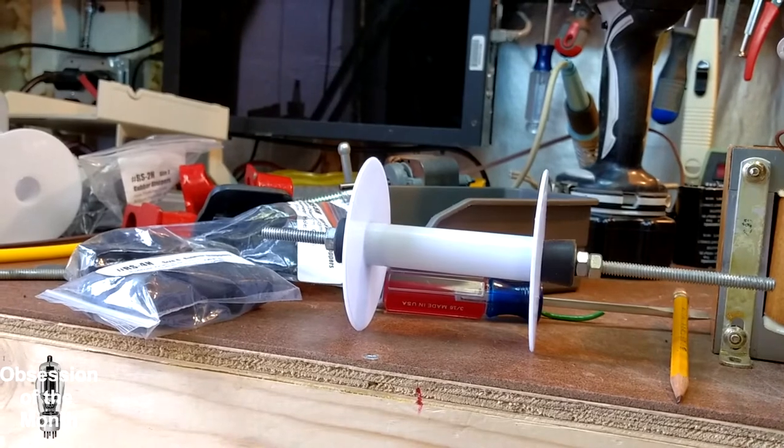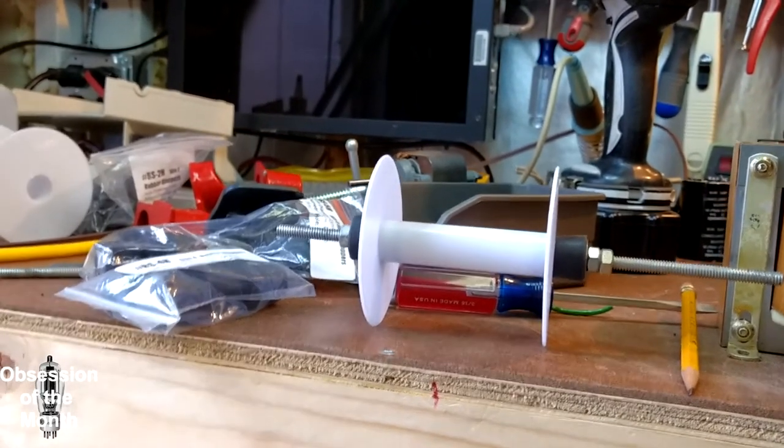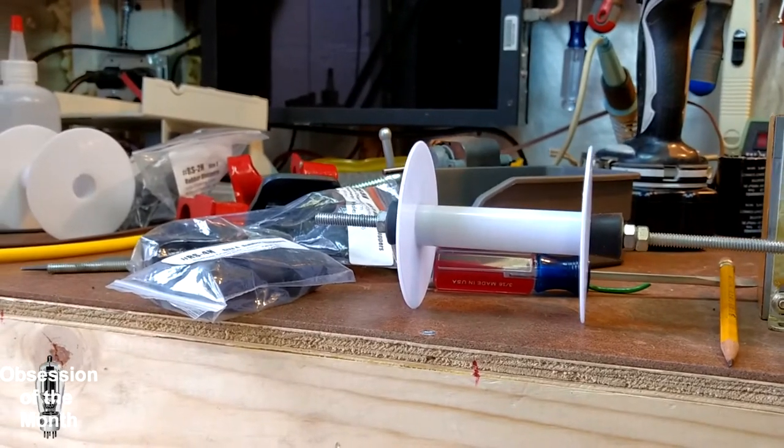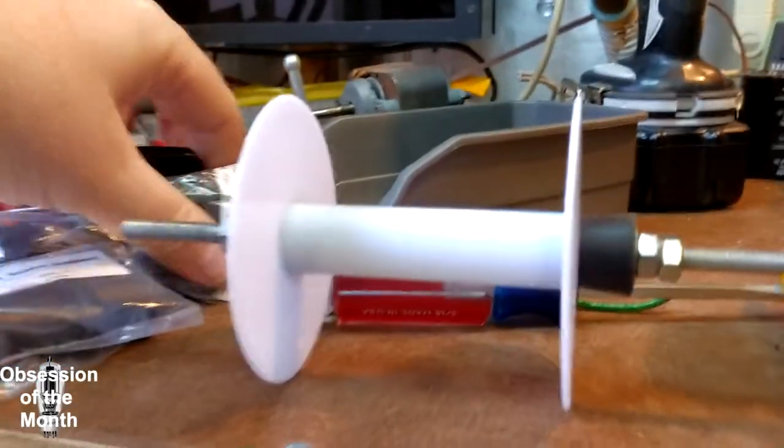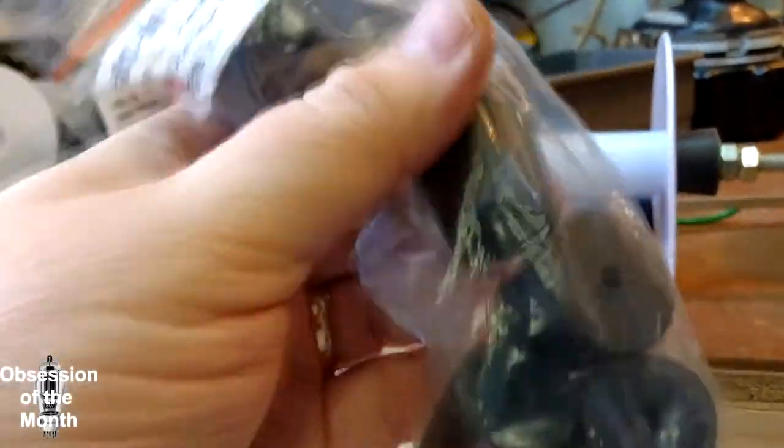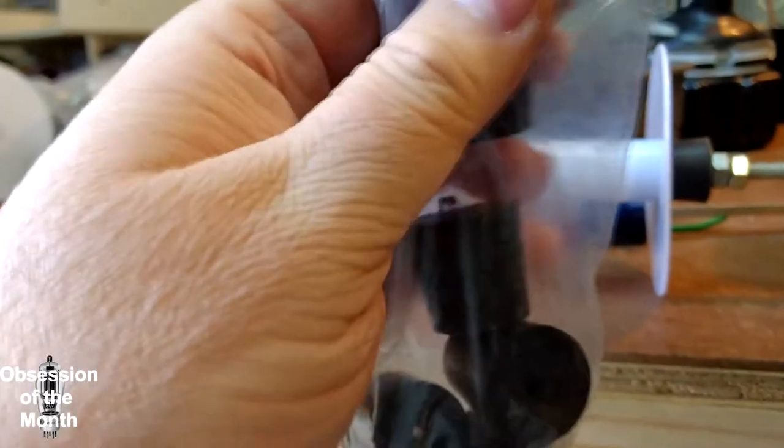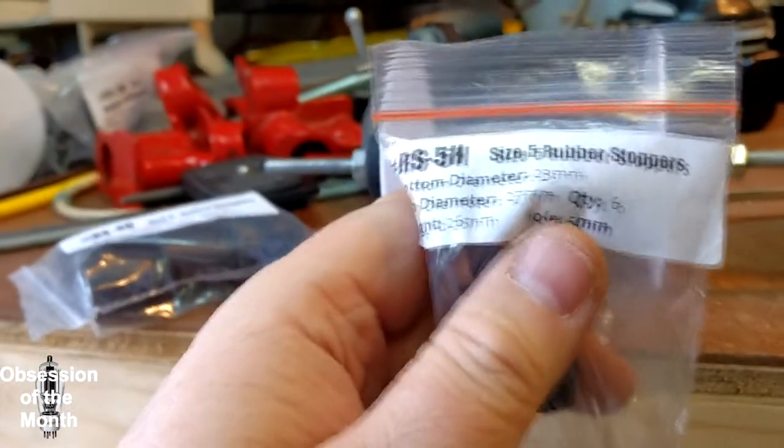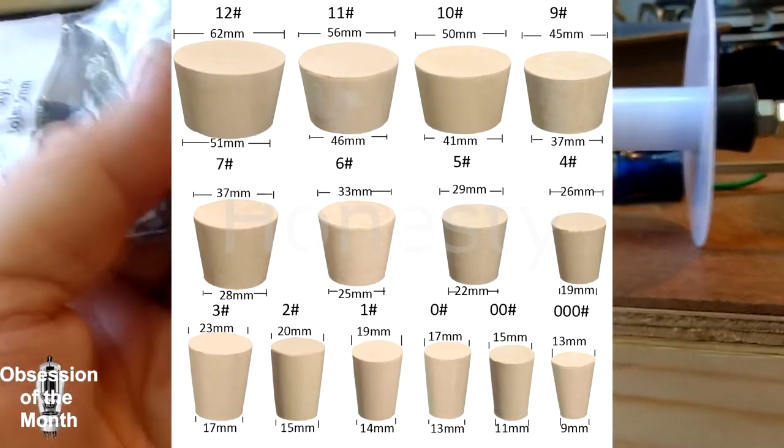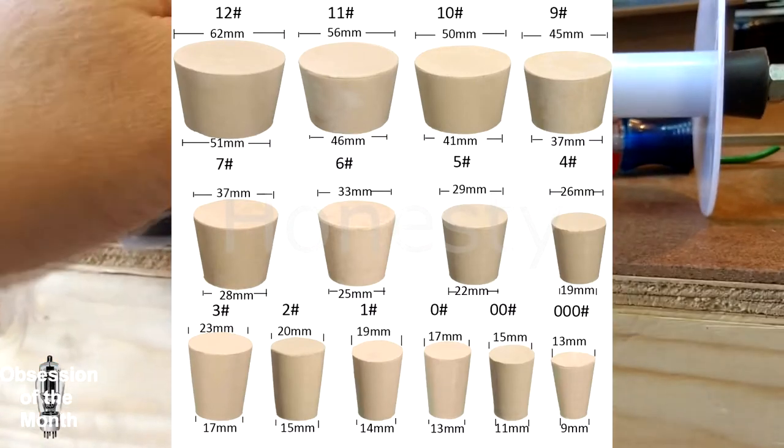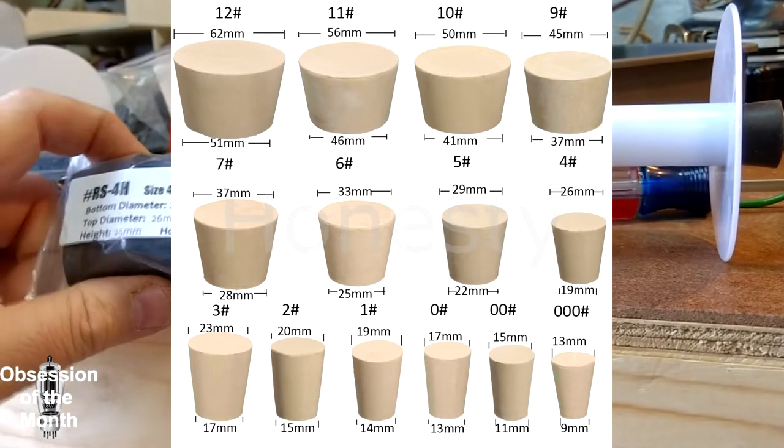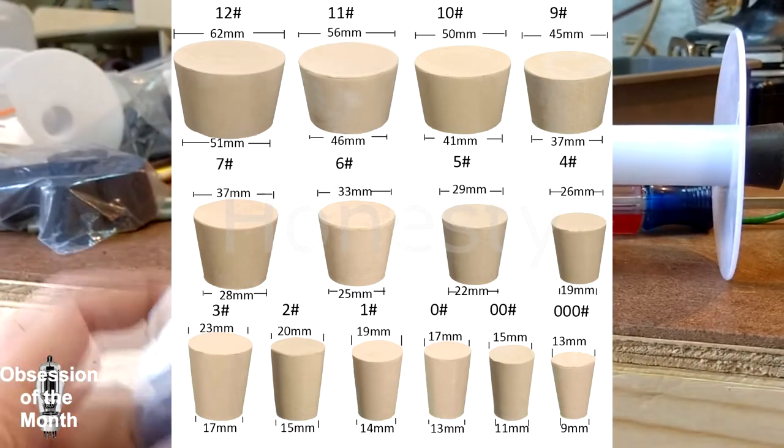What I did was order off of eBay these tapered stoppers used by chemistry people in various sizes: number 5, number 4, number 3. Each one has a taper that starts at a certain millimeter size and goes up to another, so I can do everything up to just about an inch.